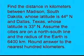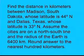Assume the cities are on a north-south line and the radius of the earth is 6,400 kilometers. Round the answer to the nearest 100 kilometers.